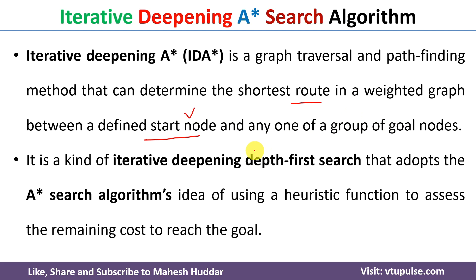IDA* is a kind of iterative deepening depth-first search algorithm, which is already discussed — the link for that video is given in the description below. This IDA* algorithm uses the heuristic function of the A* search algorithm to find the cost from the current node to the goal node. Now, what is the heuristic function and how does it work? We will try to see that.